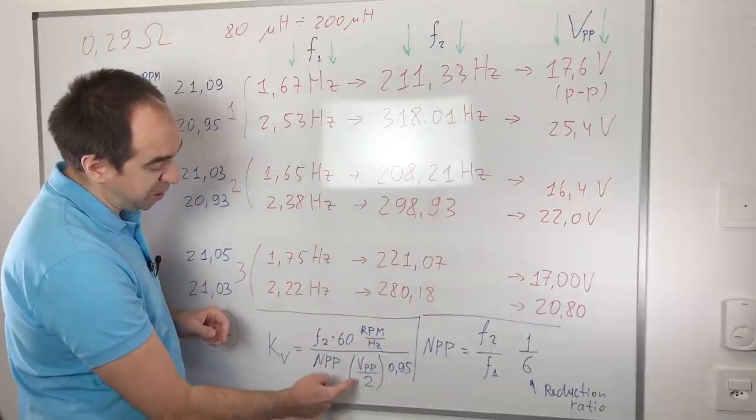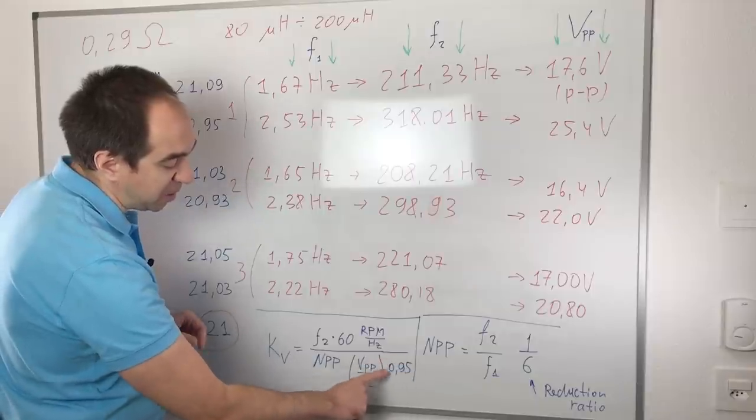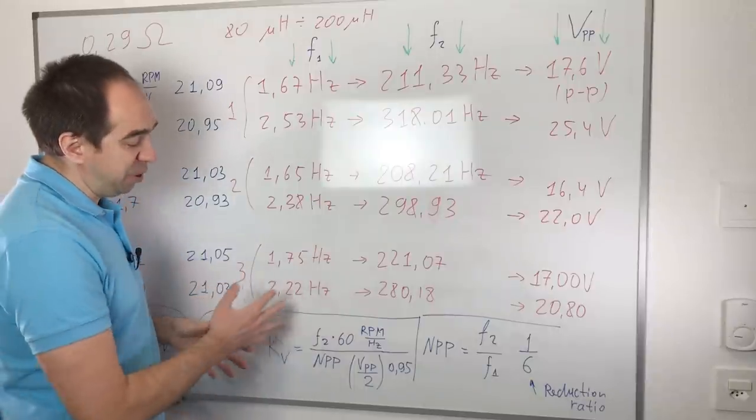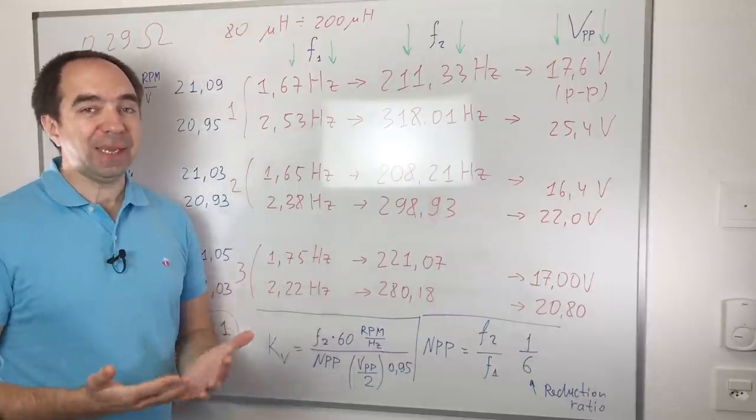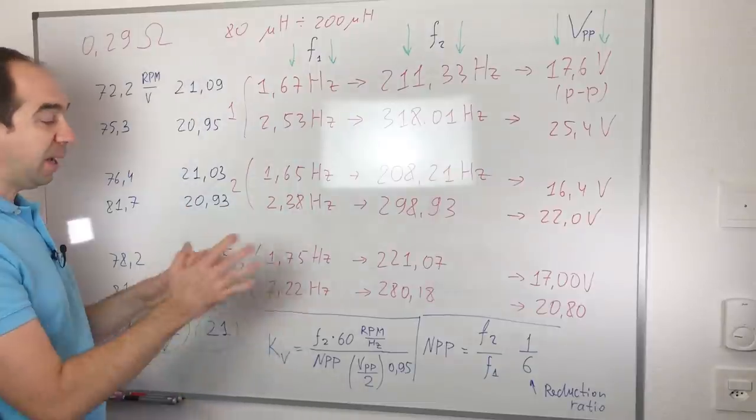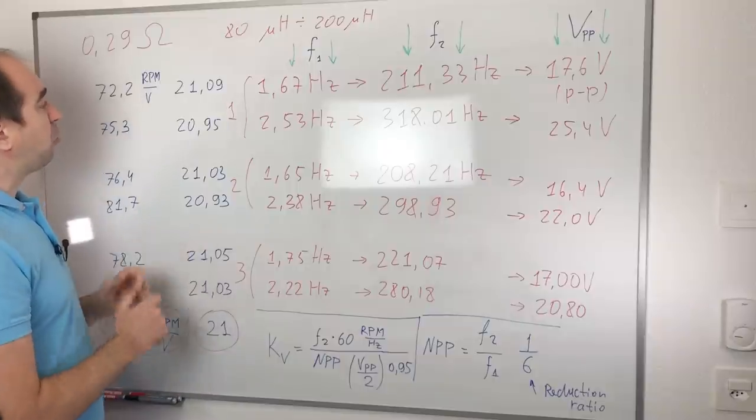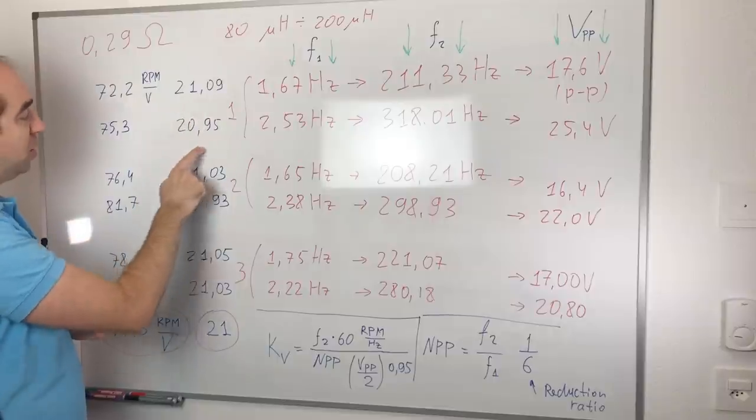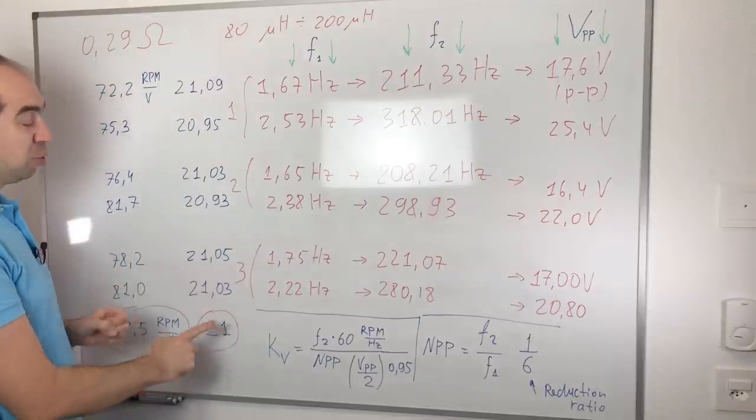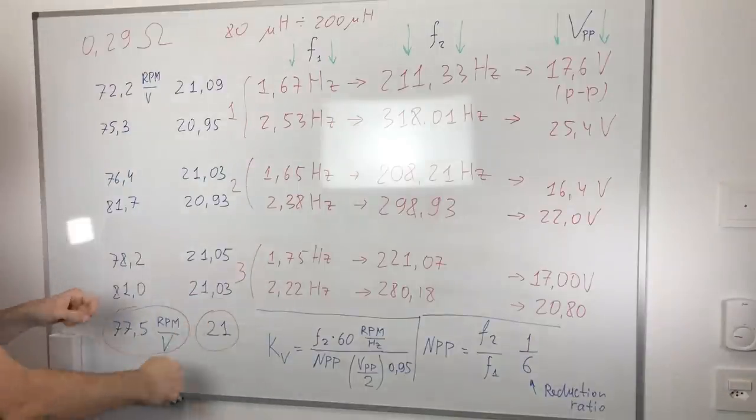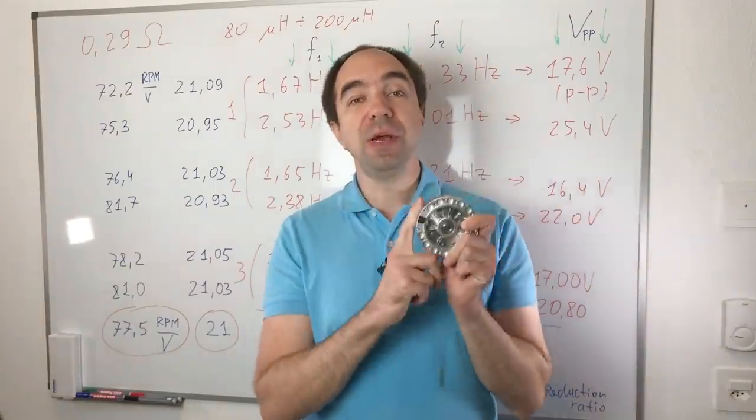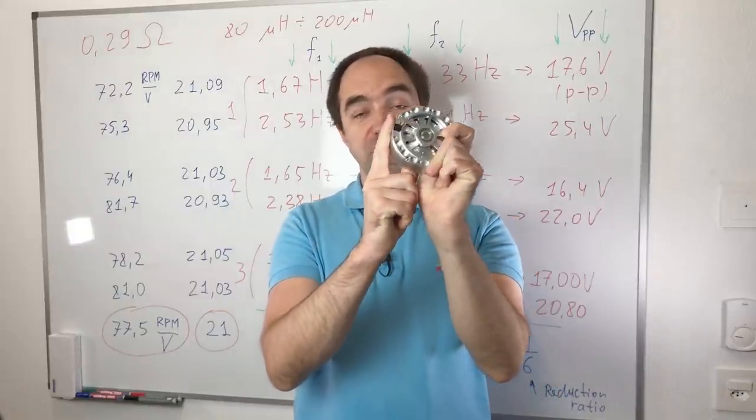So here basically this is the frequency in RPM, this is the voltage zero to peak, and there is also this factor 0.95 which I don't really know where it comes from, but apparently you need to use it. I think that probably it takes into account the efficiency of these motors. And so I applied these formulas. And for number of pole pairs I have the values here, and it's always close to 21 for each experiment. And so we can conclude that we have 21 pole pairs. And for the KV rating the values are here, and the average of these values is 78 RPM per volt. So I think we measured everything which we need for this motor, for this actuator.